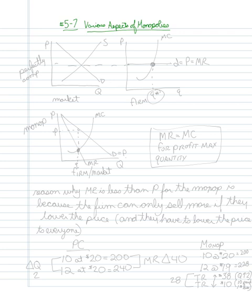And in this case, let's start first with the comparison of how these look. If firms are perfectly competitive, they look like this. Then, if they are a monopoly, the firm is the market.